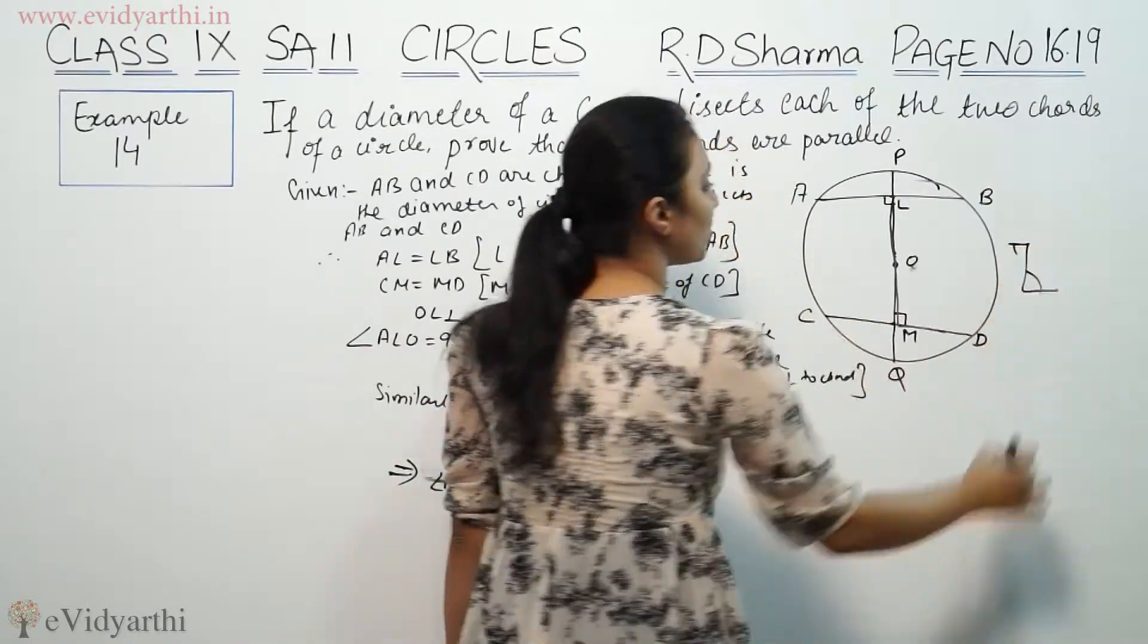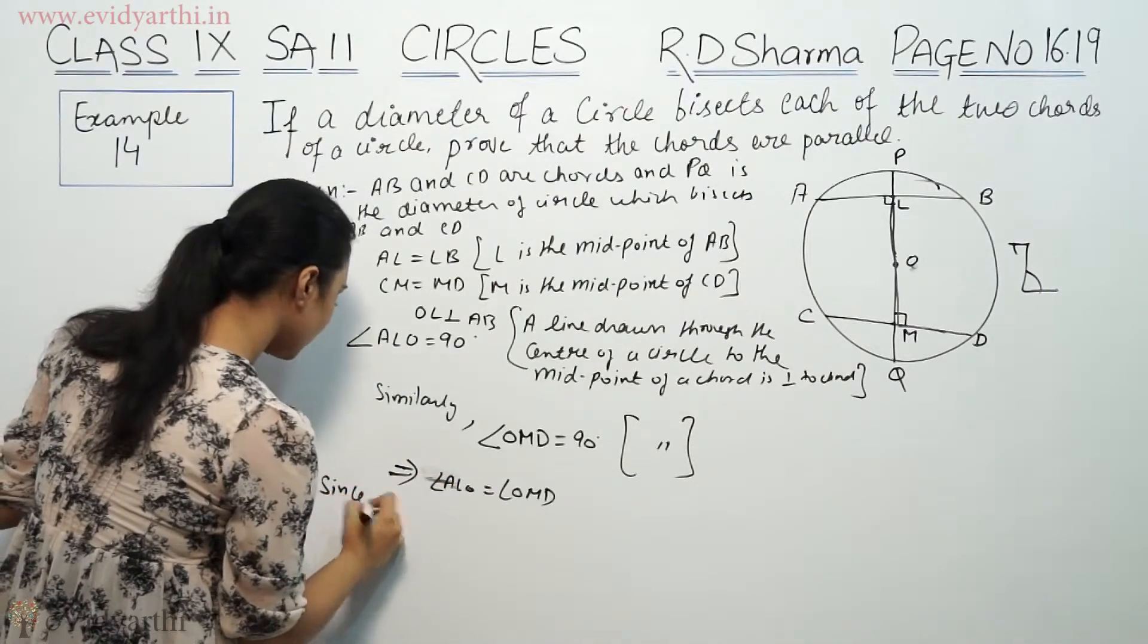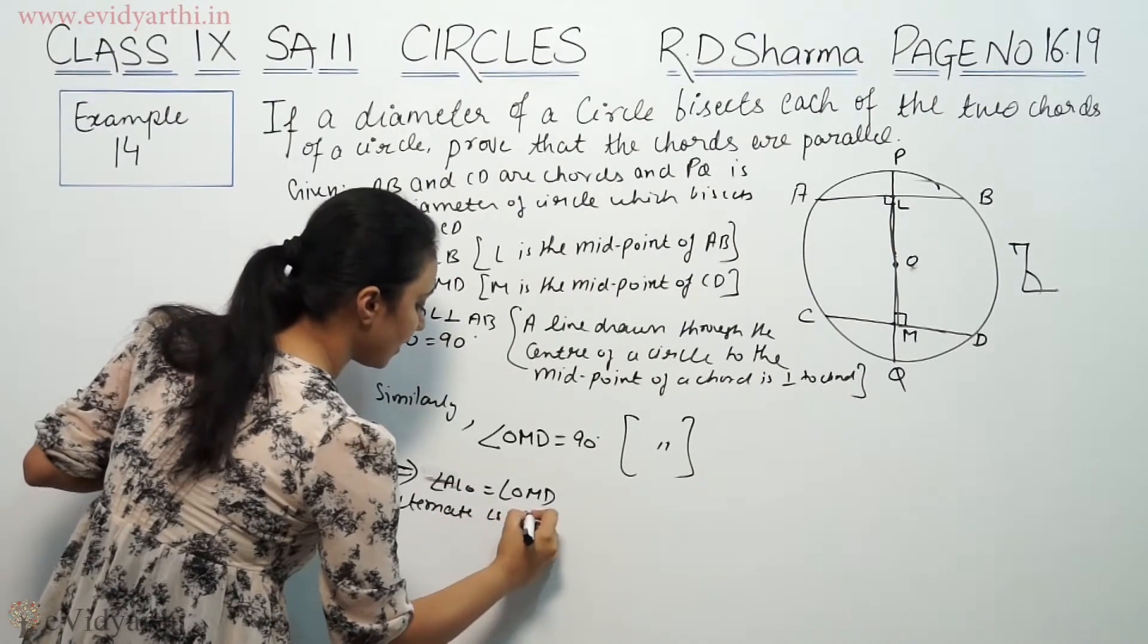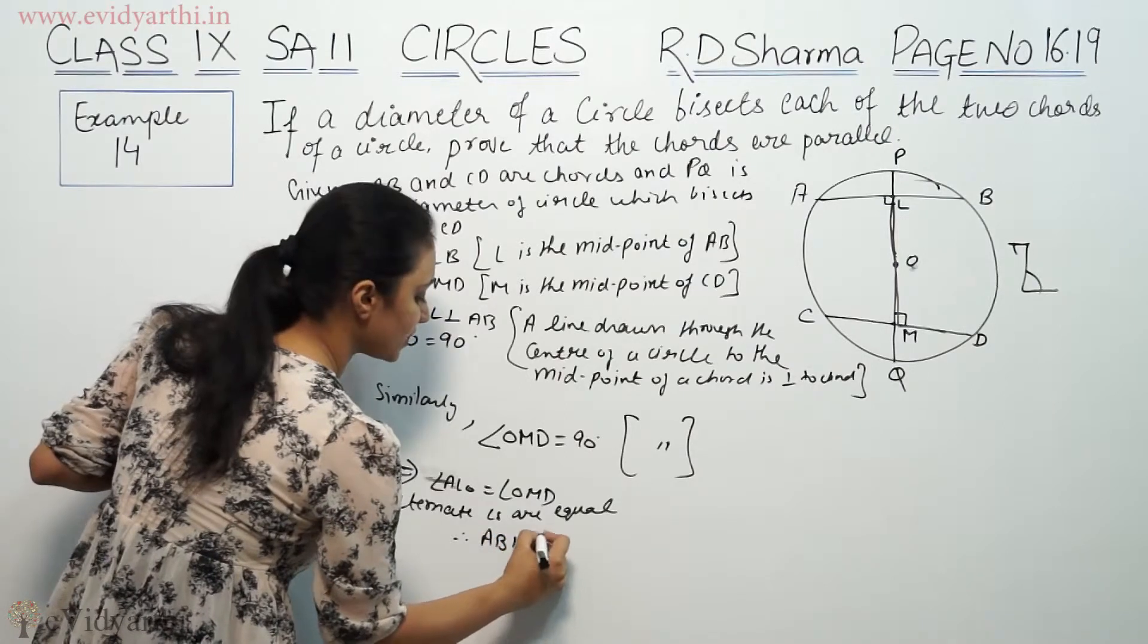So if alternate angles are equal, the lines are parallel. So we will write: since alternate angles are equal, therefore AB is parallel to CD.